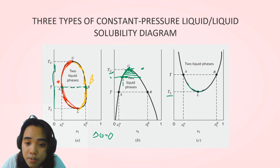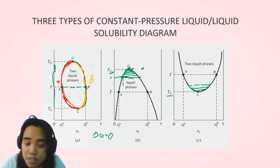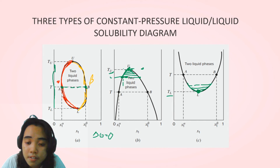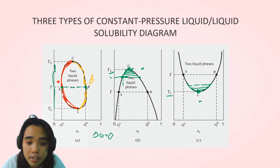Similarly, if you decrease the temperature and go lower and lower, you can still draw a tie line intersecting the two compositions. As you reach the limiting states of the two-phase equilibrium, you reach the lower critical temperature, where the properties are also identical for the two-phase equilibrium, and again the solubility increases.